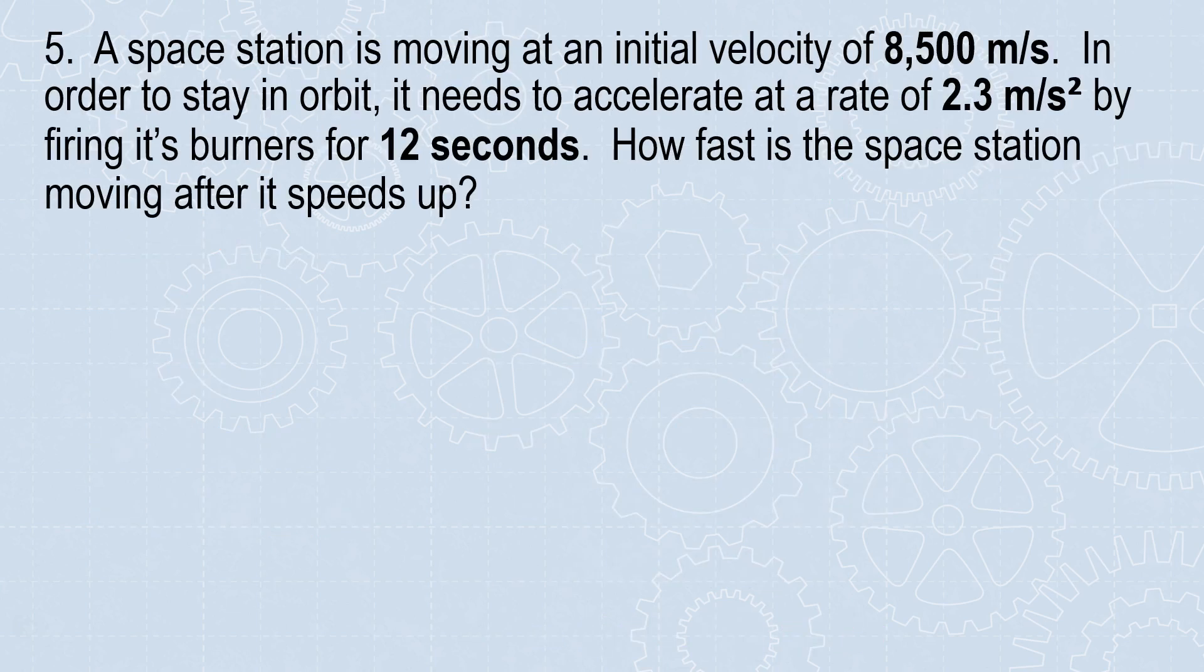Number 5: A space station is moving at an initial velocity of 8,500 meters per second. In order to stay in orbit, it needs to accelerate at a rate of 2.3 meters per second squared by firing its burners for 12 seconds. How fast is the space station moving after it speeds up?